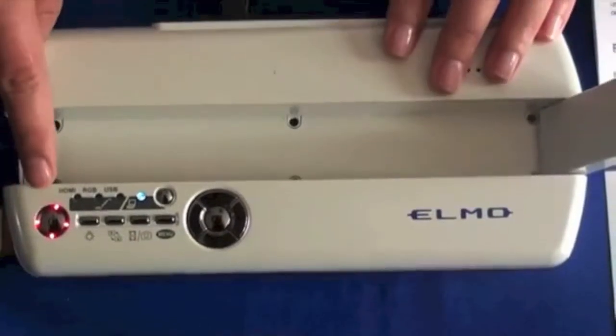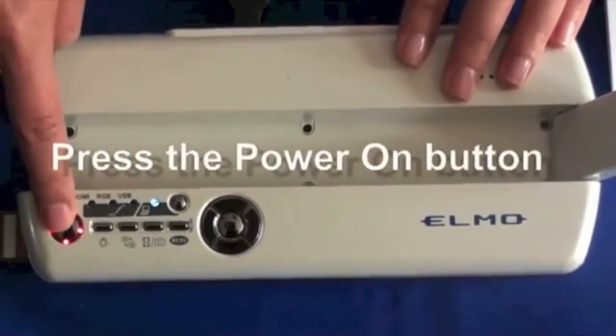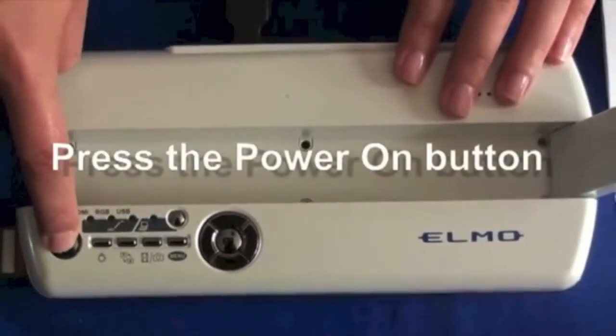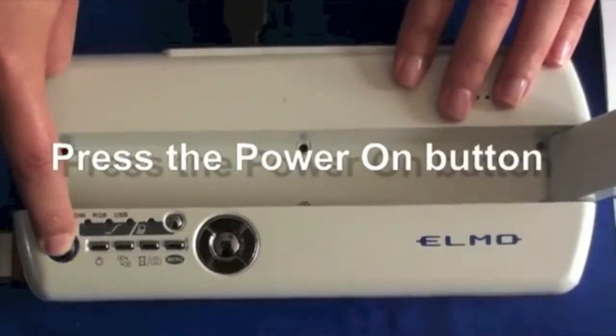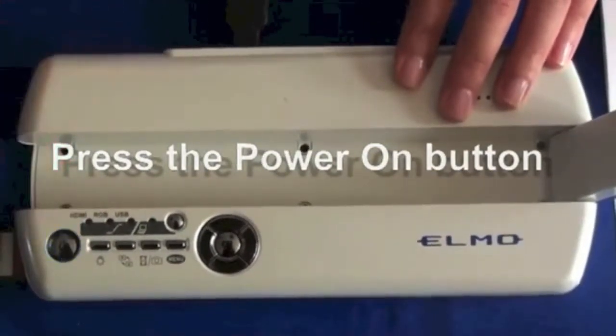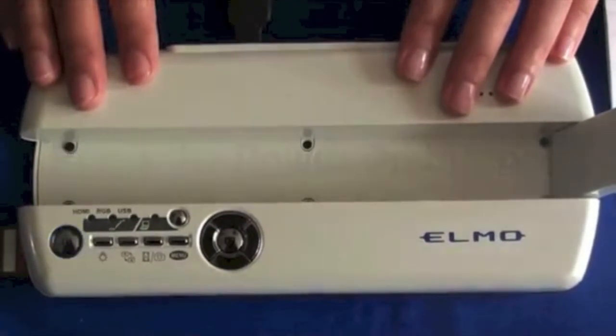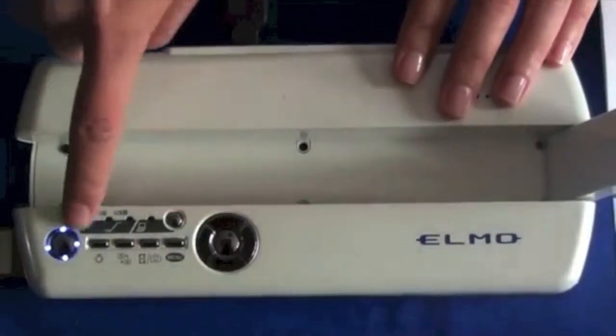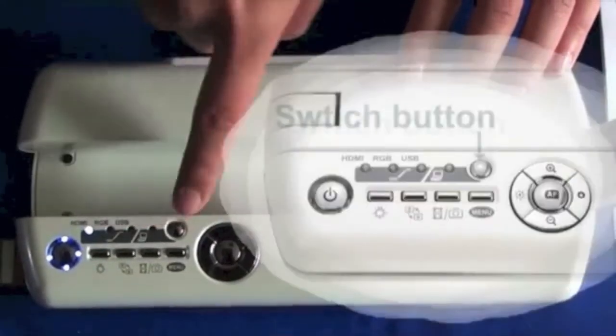To start using MO1, first you need to turn on the power by pressing the power button for three seconds. When you see the blue lights, then you can start using your MO1.